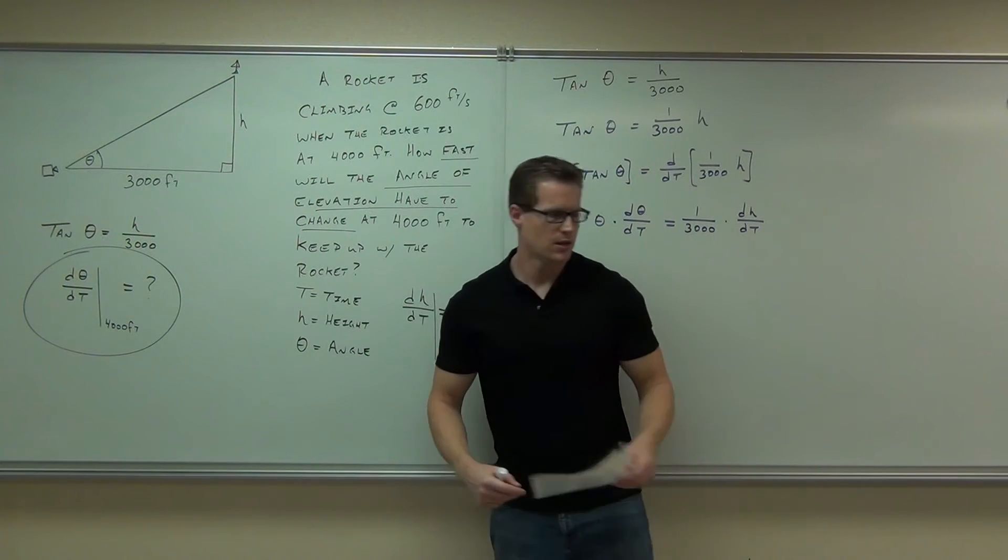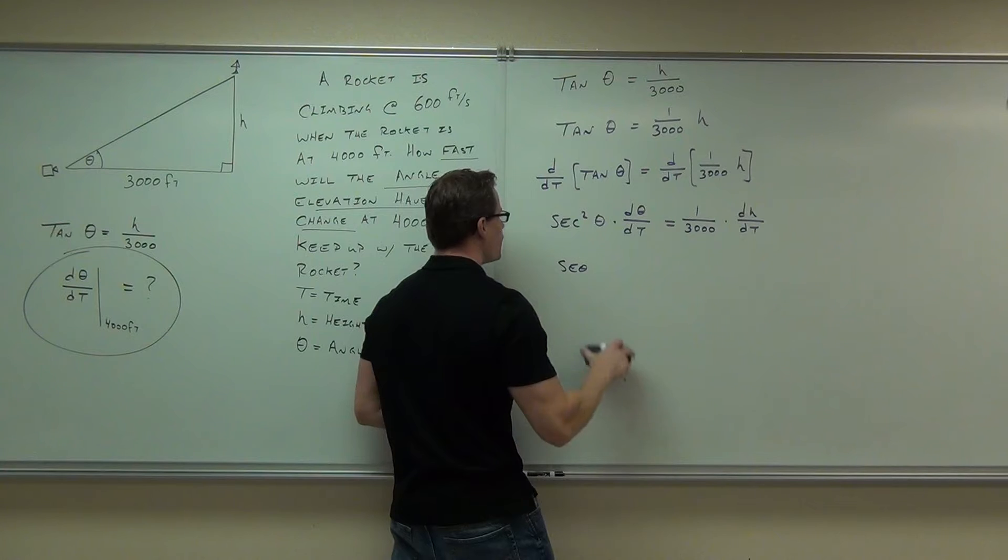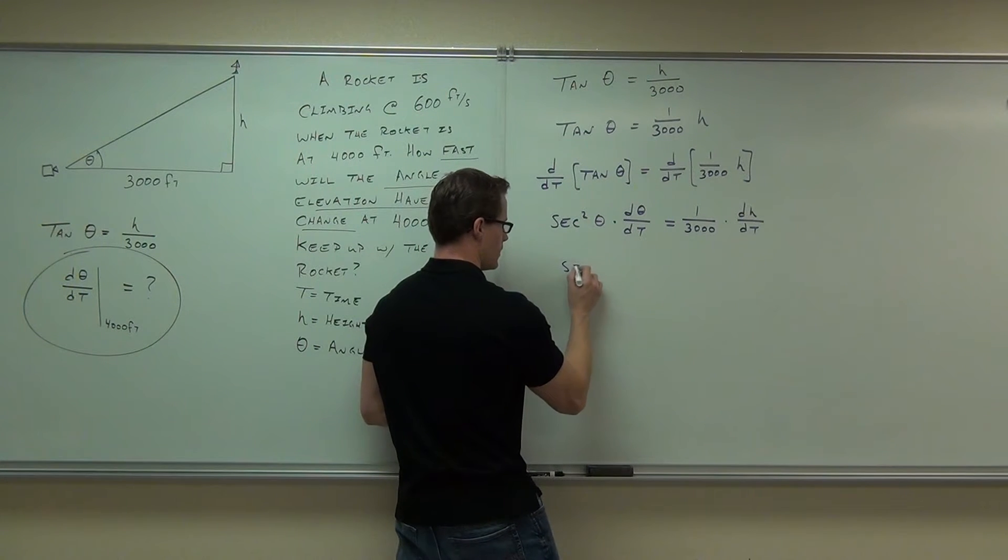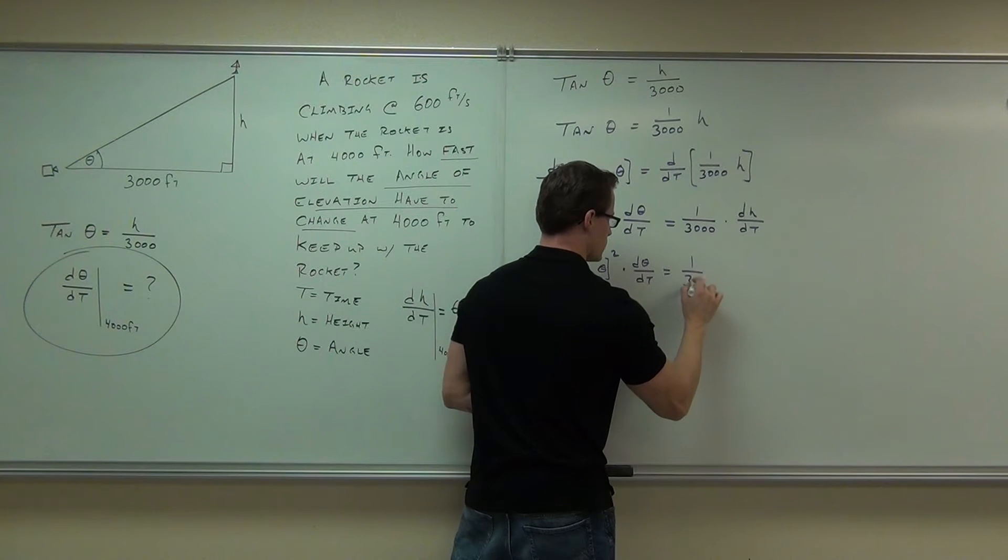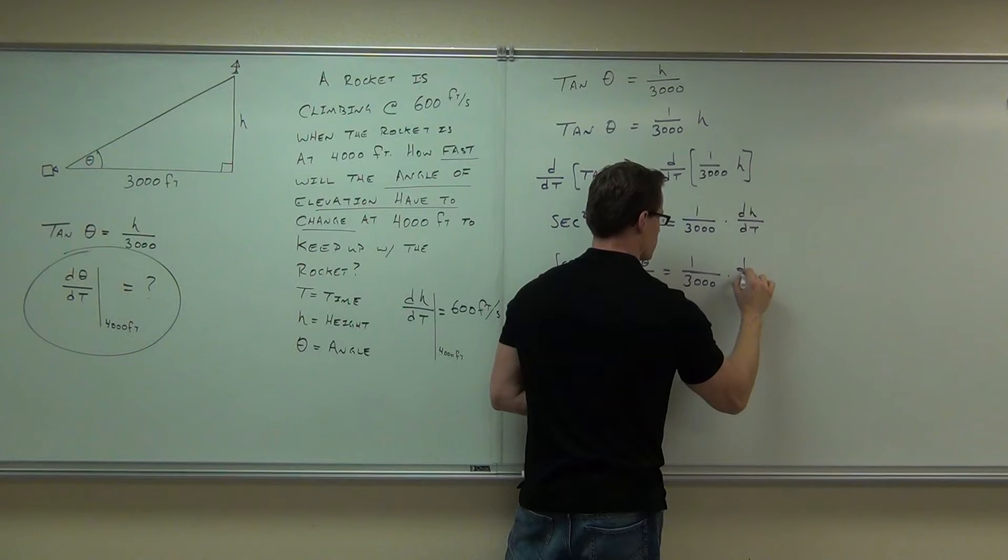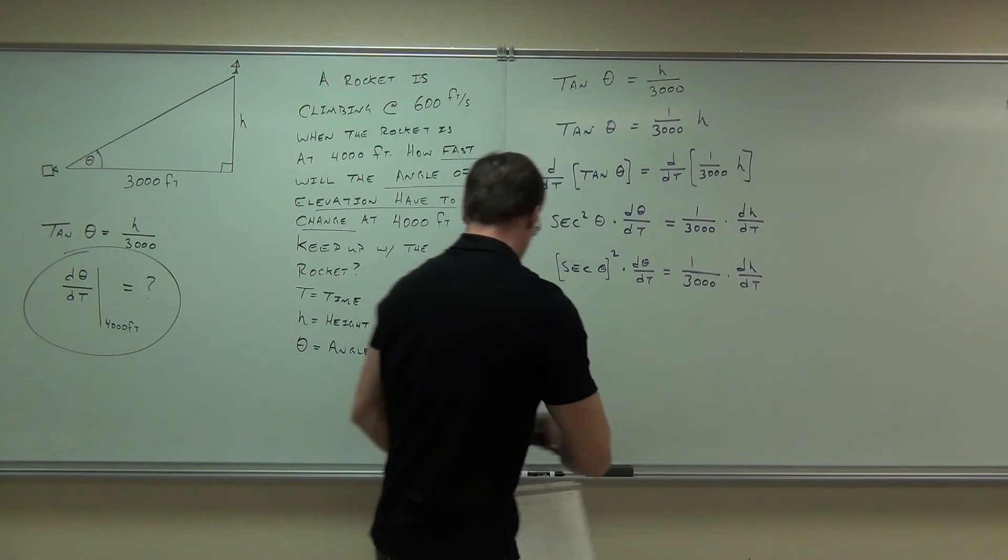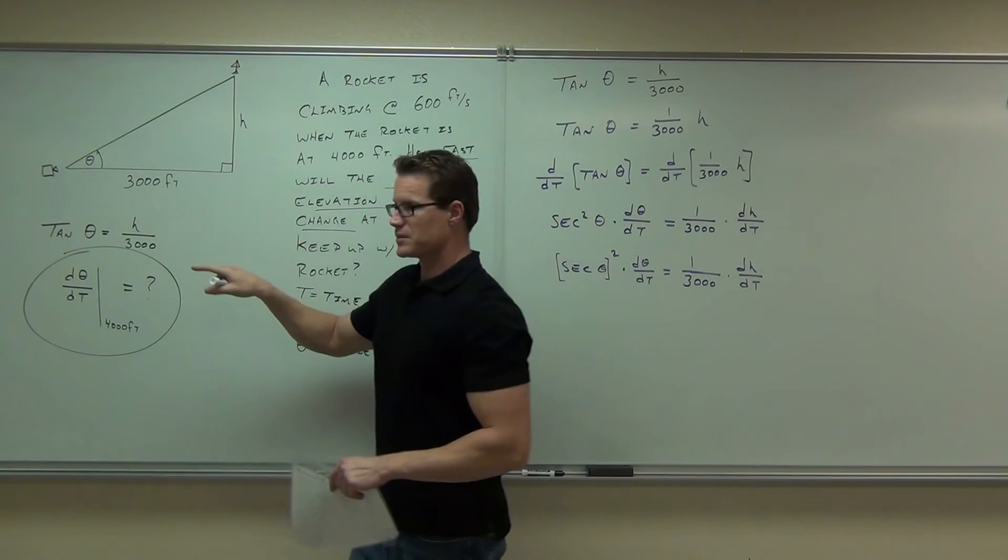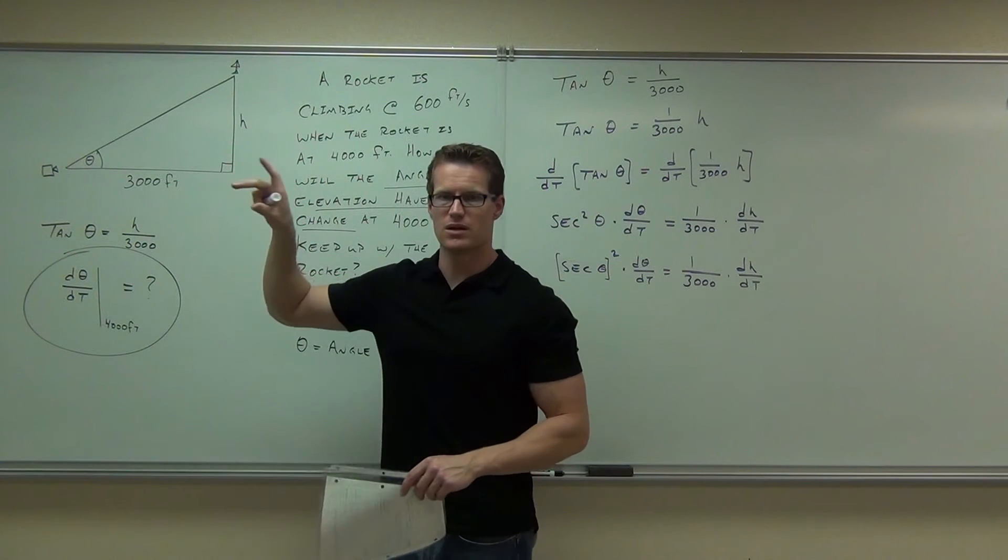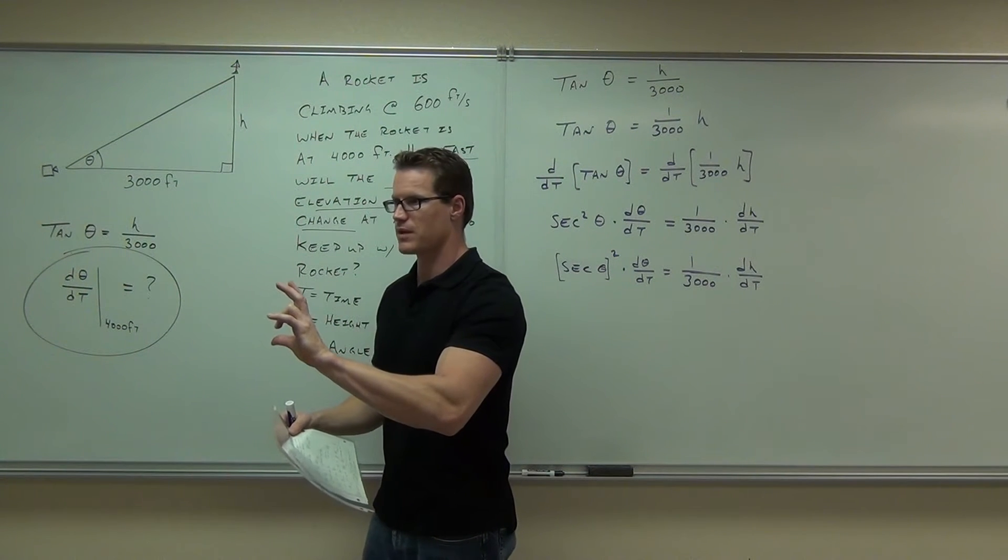This one might take a little bit more work. Let's talk about secant squared theta for a second. First thing I need you to understand is that secant squared theta really means secant theta squared. Keep in mind this is all occurring at 4,000 feet. So let's go back over to our picture here and kind of fill in the blanks a little bit. This is 3,000. This is h at a specific time will be 4,000 at the moment of time that we're looking at.